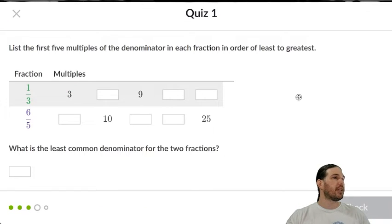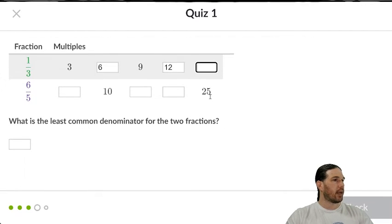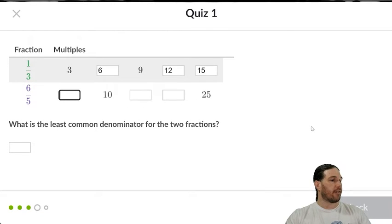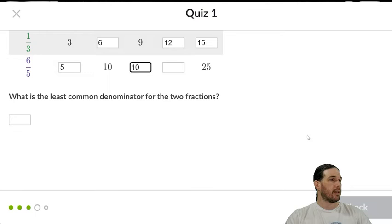List the first five multiples of the denominator for each fraction in order of least to greatest. What is the least common denominator between the two fractions? Well, let's see. That's 3, 6, 9, 12, 15, and then 5 goes 5, 10, 15. That's the 10. There we go. 15, 20, 25. I know what I'm doing. I'm a math teacher. I'm a professional. And then it looks to me like the least common denominator between the two is 15, which makes sense.